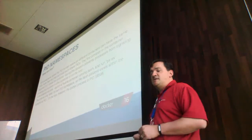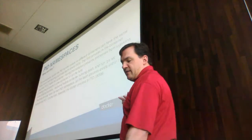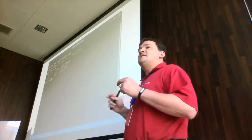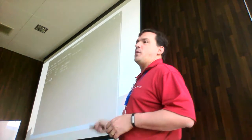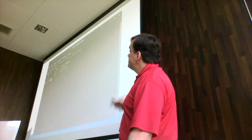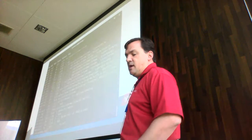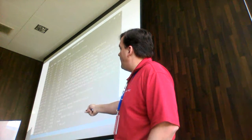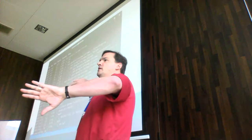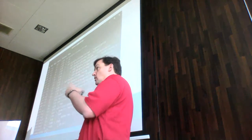PID namespaces isolate the process ID numbers inside the container from the PID numbers on the host. For example, when I run docker run -it fedora and run bash, inside the container bash thinks it is process ID number 1. But the reality is it's process ID 18596 on the host. The whole point is we want the container to have no awareness of what's on the host, so if something bad happens in the container it can only affect those process IDs presented to that container.